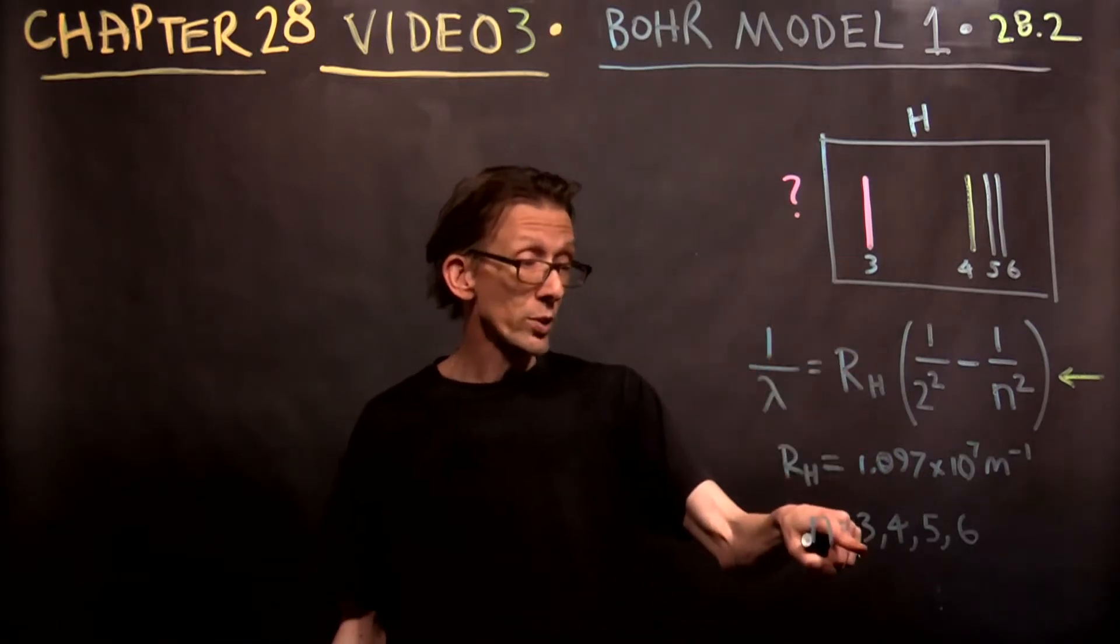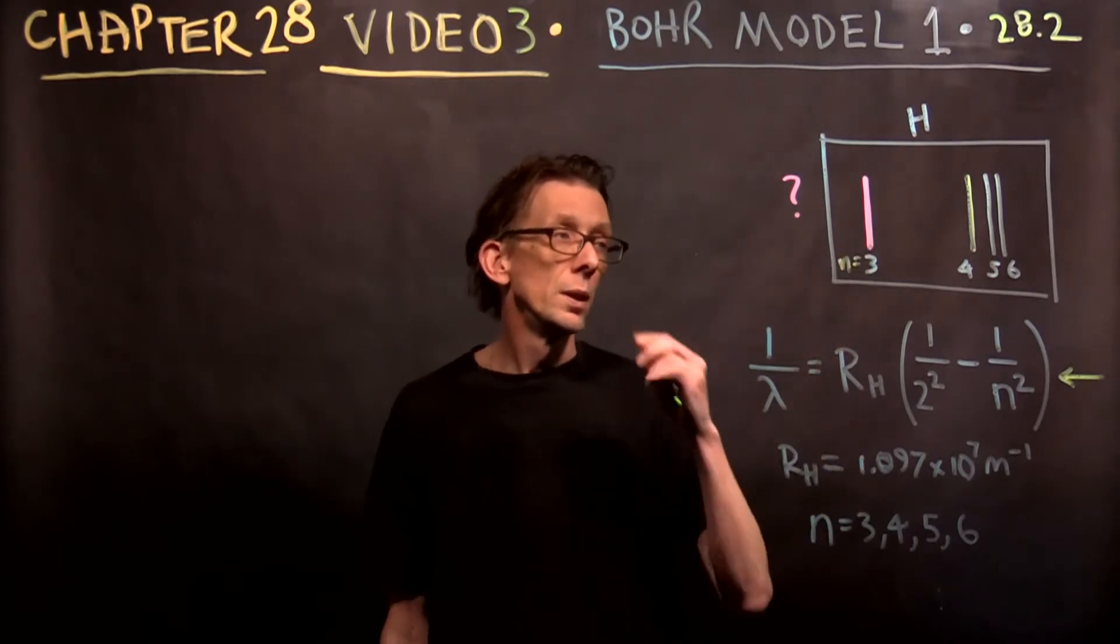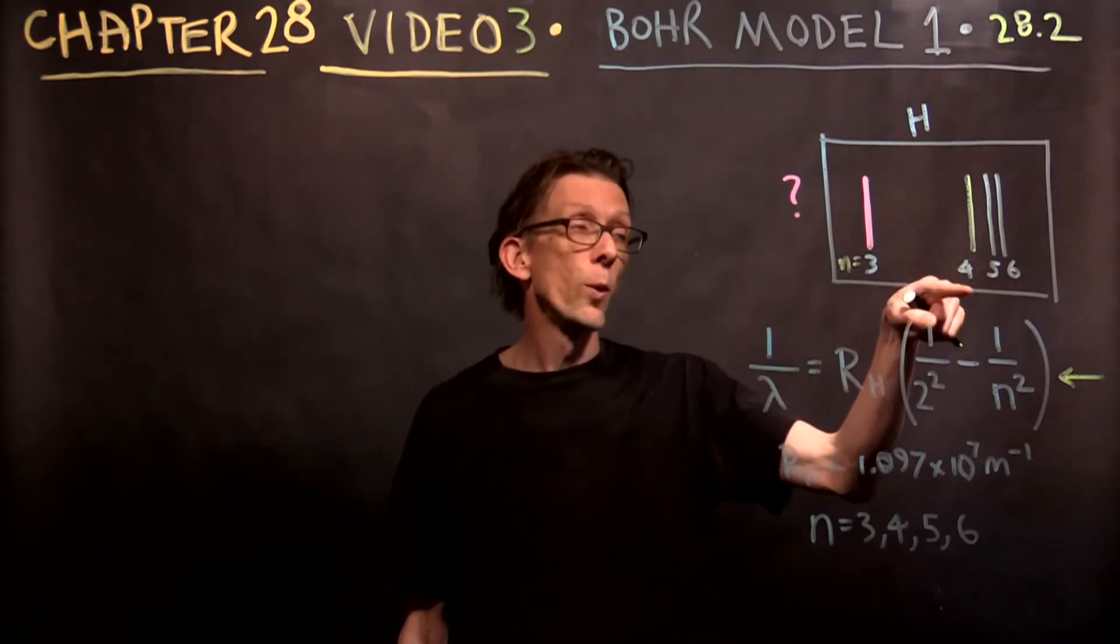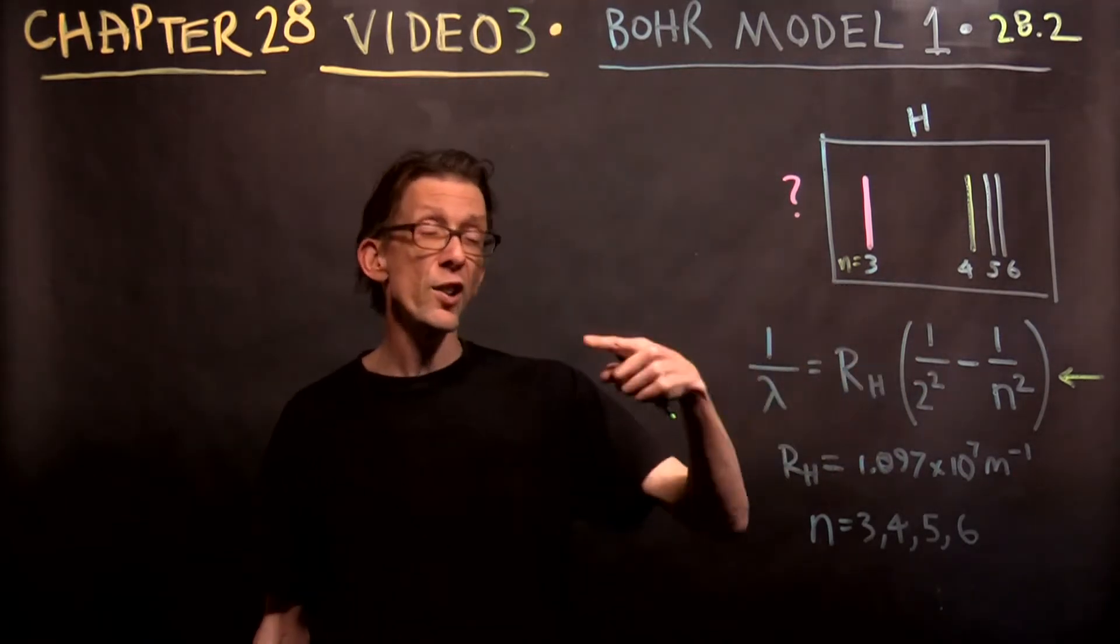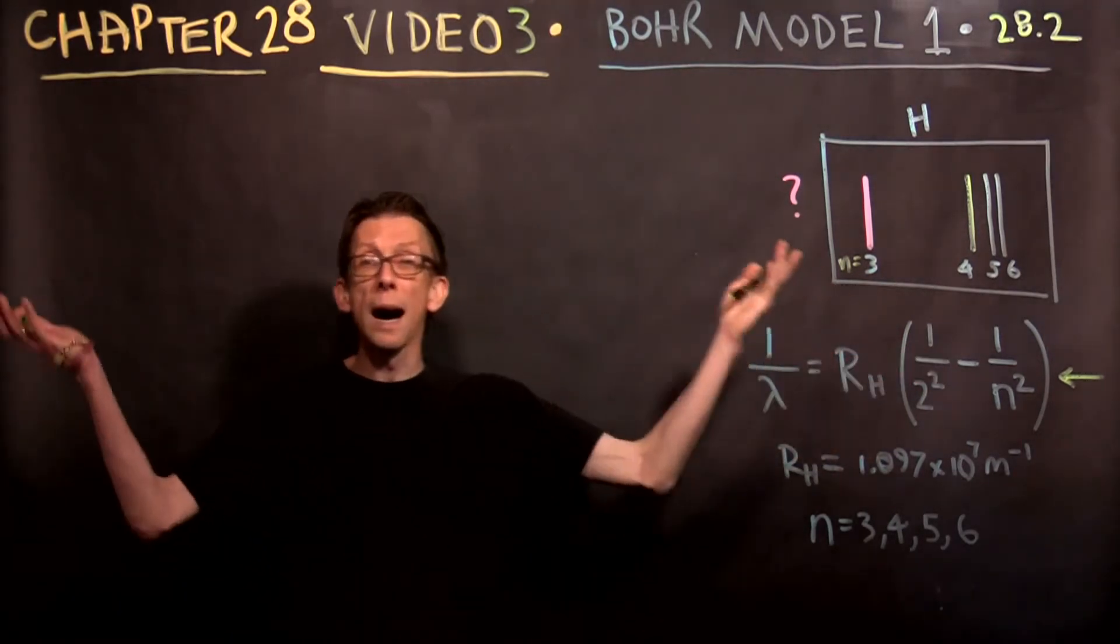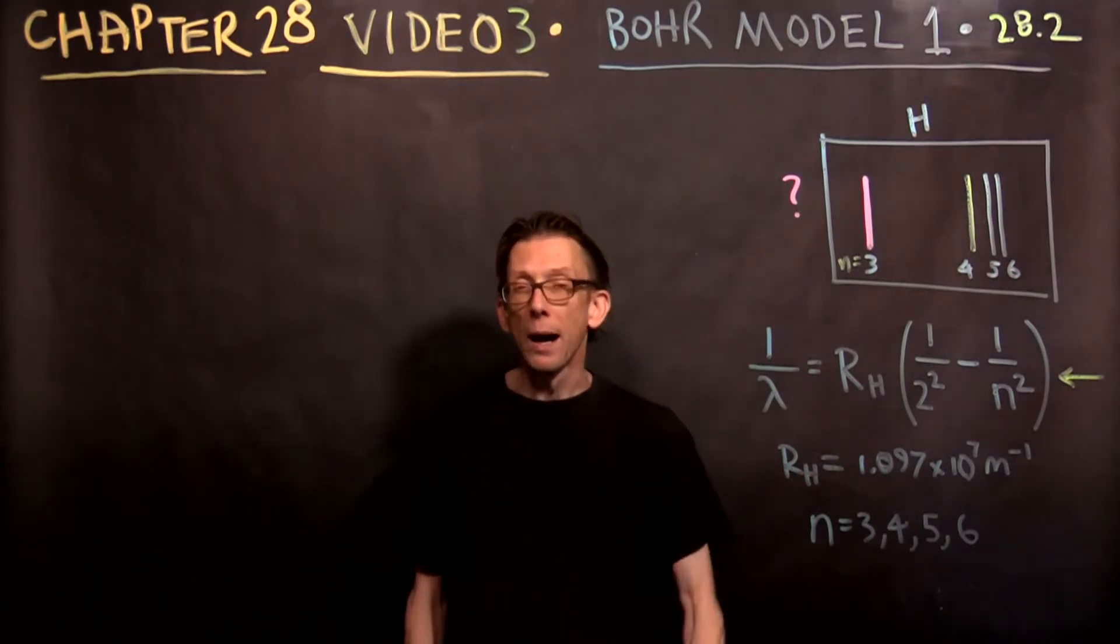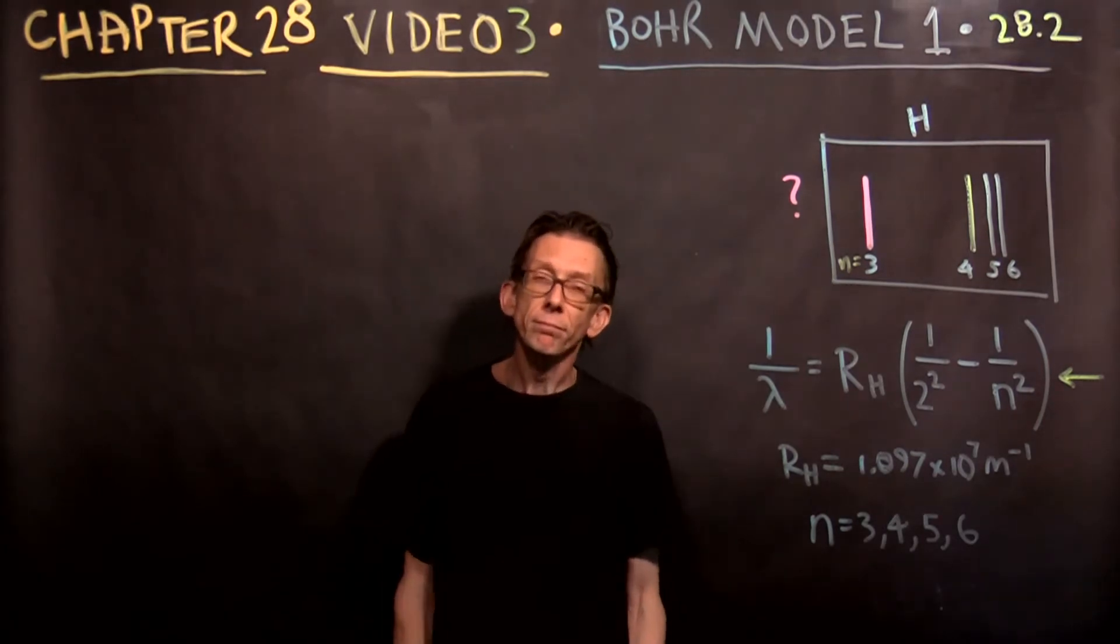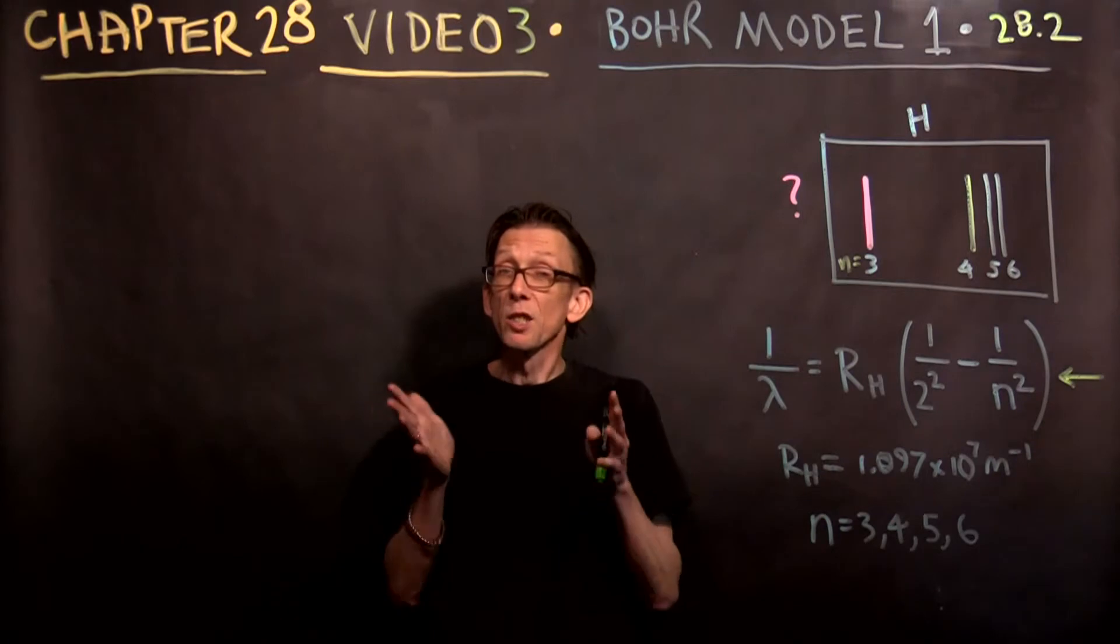The red color goes n equals 3. These are the n numbers here, and then the bluish one is 4, and the two deep purple ones are 5 and 6. You plug those numbers in here, you get the right wavelength out, but why? Well, Niels Bohr figured out why, partially, and we're going to talk about what he figured out because it's super awesome.